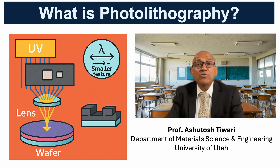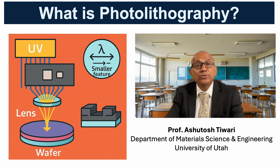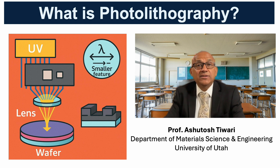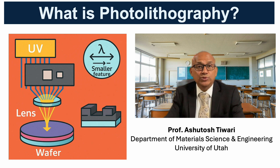Photolithography is the foundation of modern semiconductor manufacturing. A light source projects ultraviolet radiation through a patterned mask onto a photoresist-coated wafer. The transparent and opaque regions of the mask determine which parts of the resist are exposed.